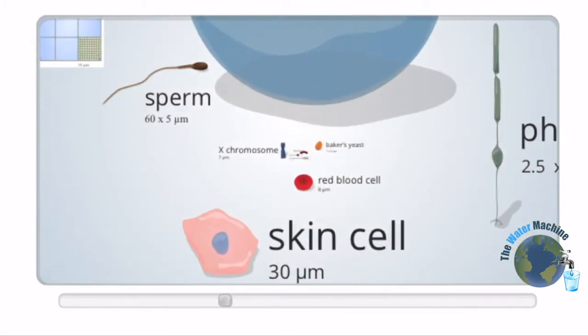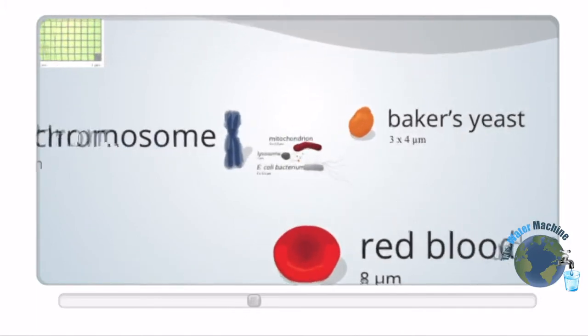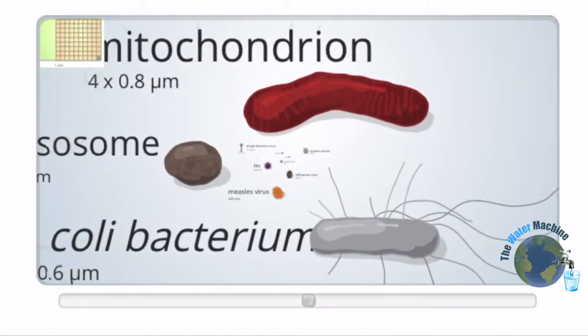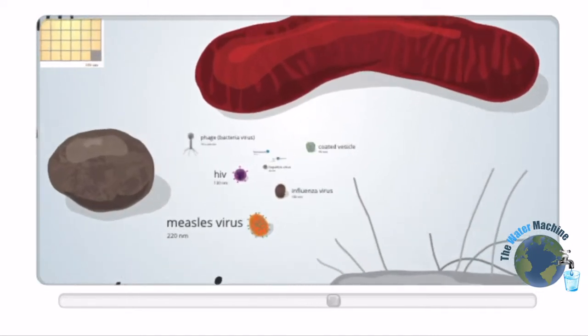And then one of our skin cells. Then a red blood cell. Then E. coli bacteria. Wow! Even smaller are the measles and flu virus.